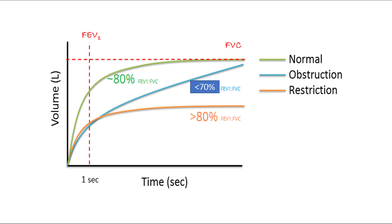The FEV1/FVC ratio in obstructive lung disease remains around less than 70%. In restrictive lung diseases, due to fibrosis or other underlying lung pathology preventing full expansion, both FEV1 and FVC are reduced in proportion to each other, so the FEV1/FVC ratio remains normal. In severe restrictive lung disease, the FEV1/FVC ratio may increase above 80%, because decreased compliance due to fibrosis reduces FVC even more than FEV1. In these cases, the ability to expire air is still better than the ability to inspire.